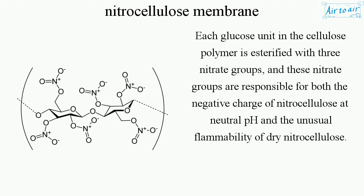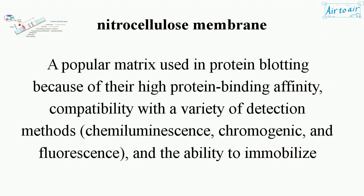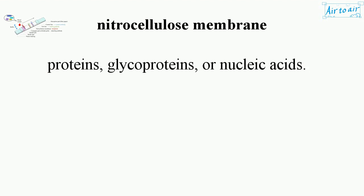Each glucose unit in the cellulose polymer is esterified with three nitrate groups, and these nitrate groups are responsible for both the negative charge of nitrocellulose at neutral pH and the unusual flammability of dry nitrocellulose.